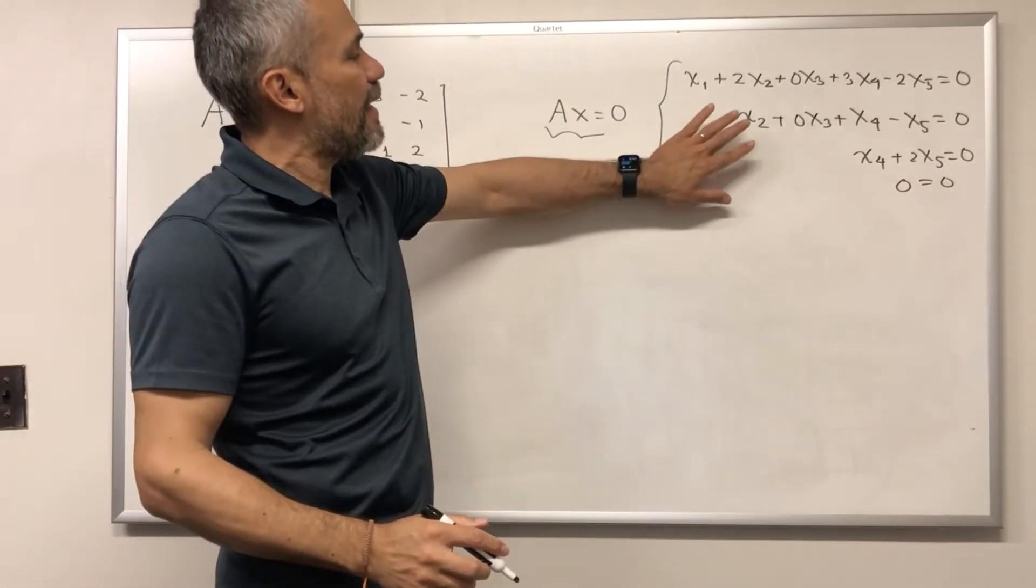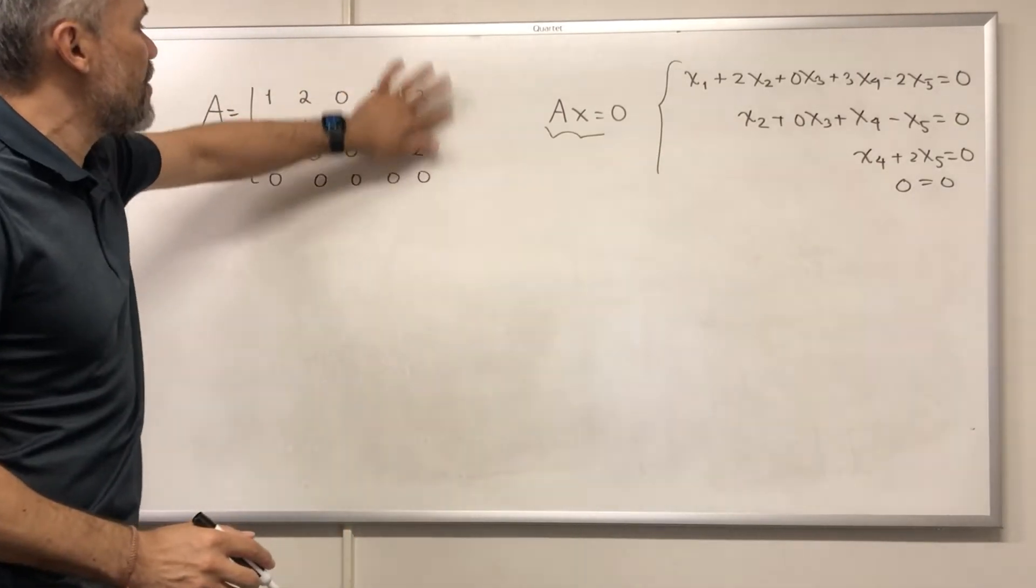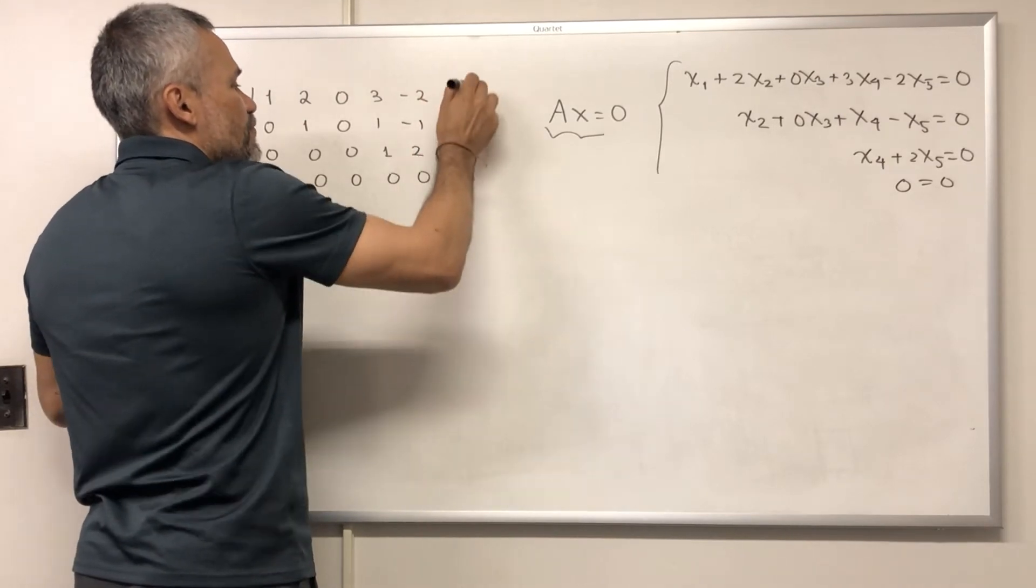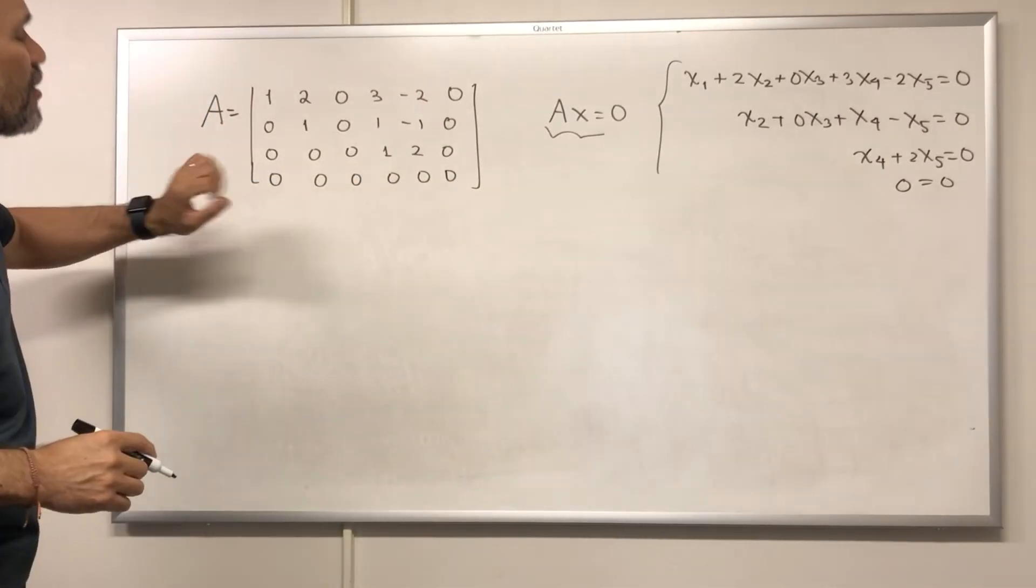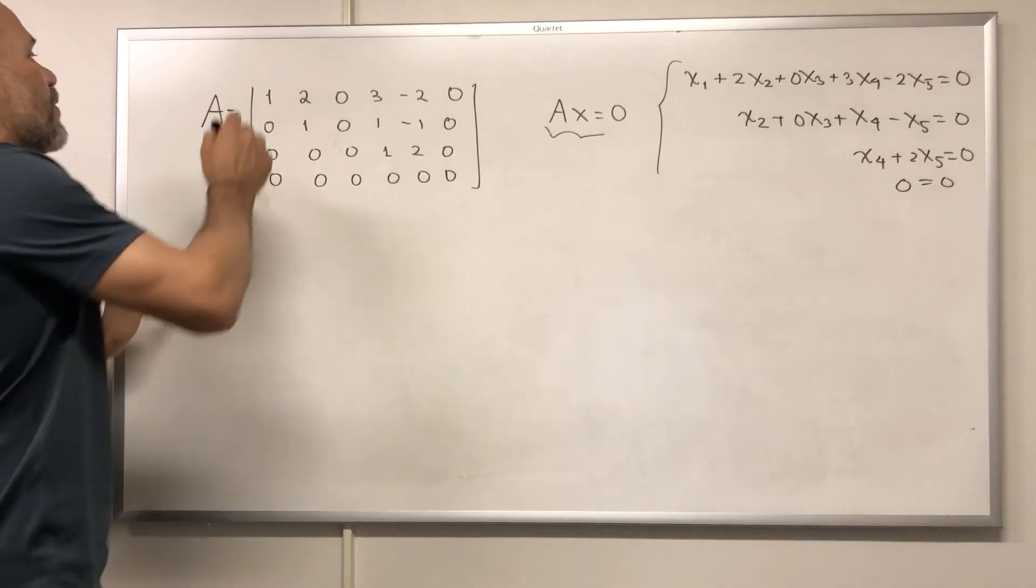We have that the augmented matrix of this system is just the matrix that we get when we add a column of 0 here. We notice that this matrix is already in echelon form and here we have the pivots.